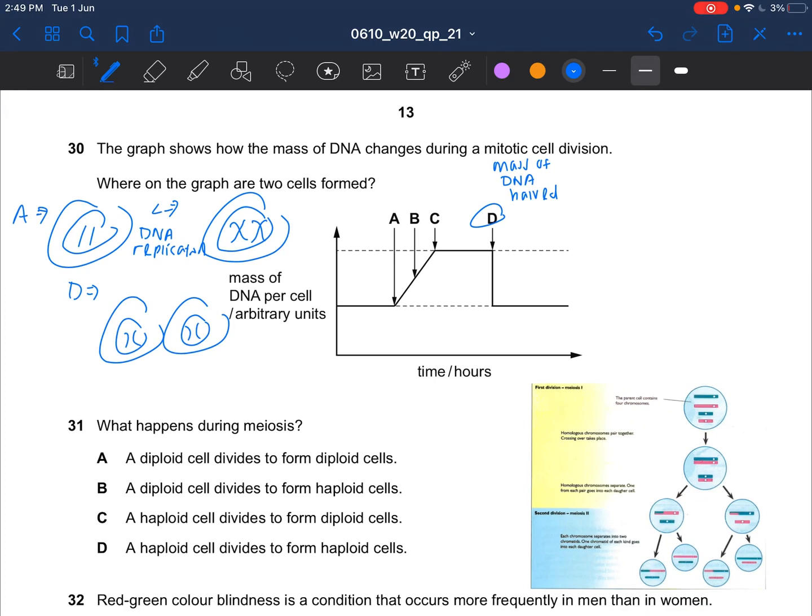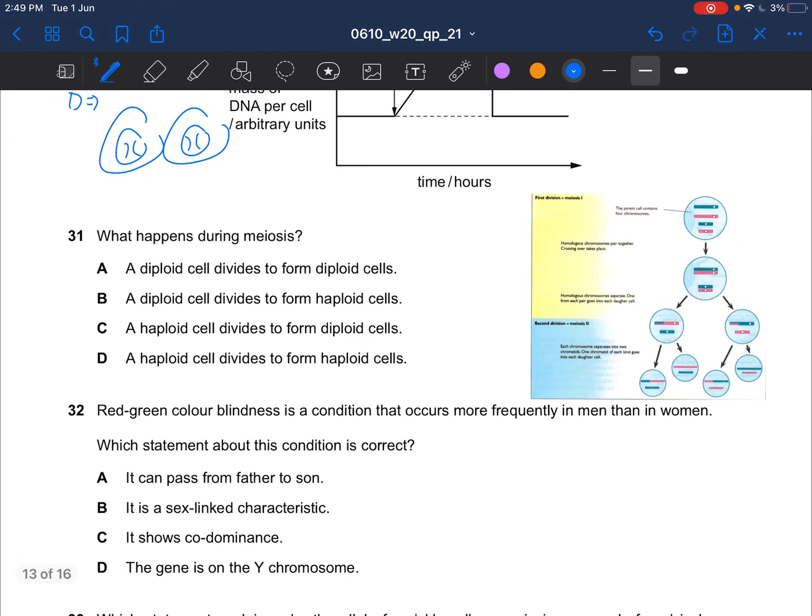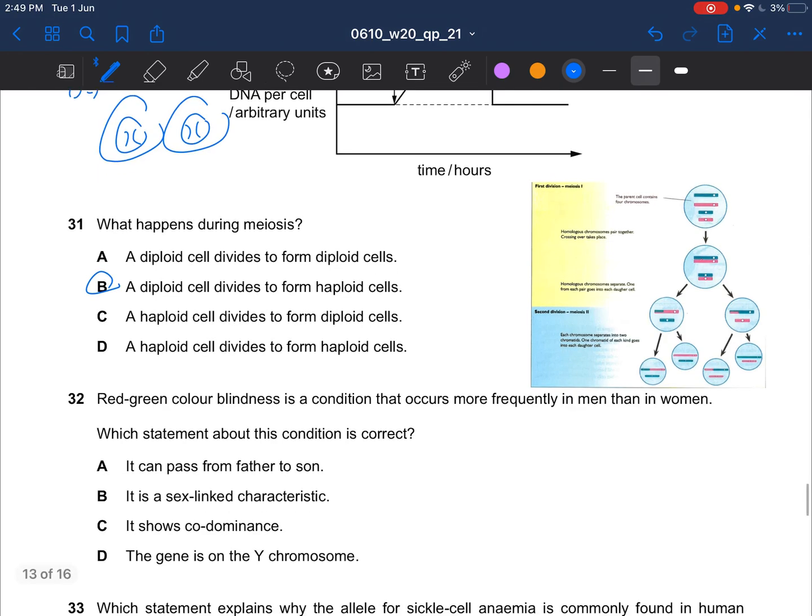Next question. What happens during meiosis? Meiosis is from diploid to haploid. So the answer for question 31 would be B. You can't divide a haploid cell to diploid.